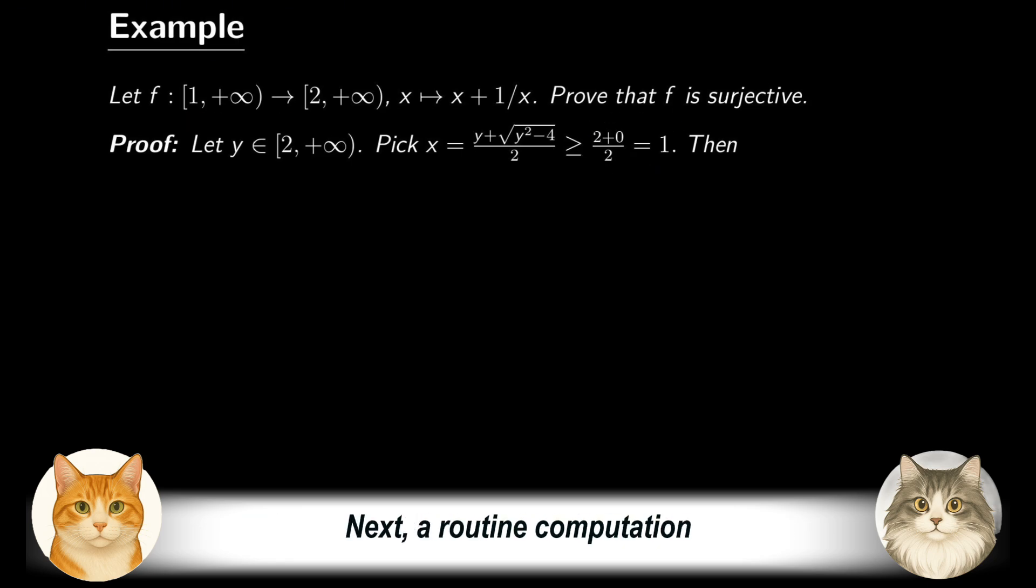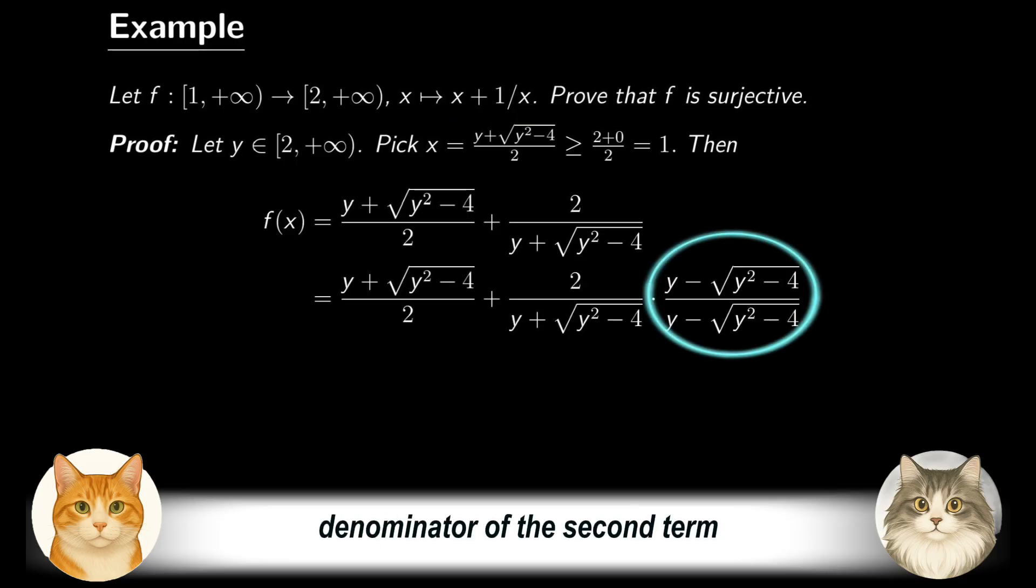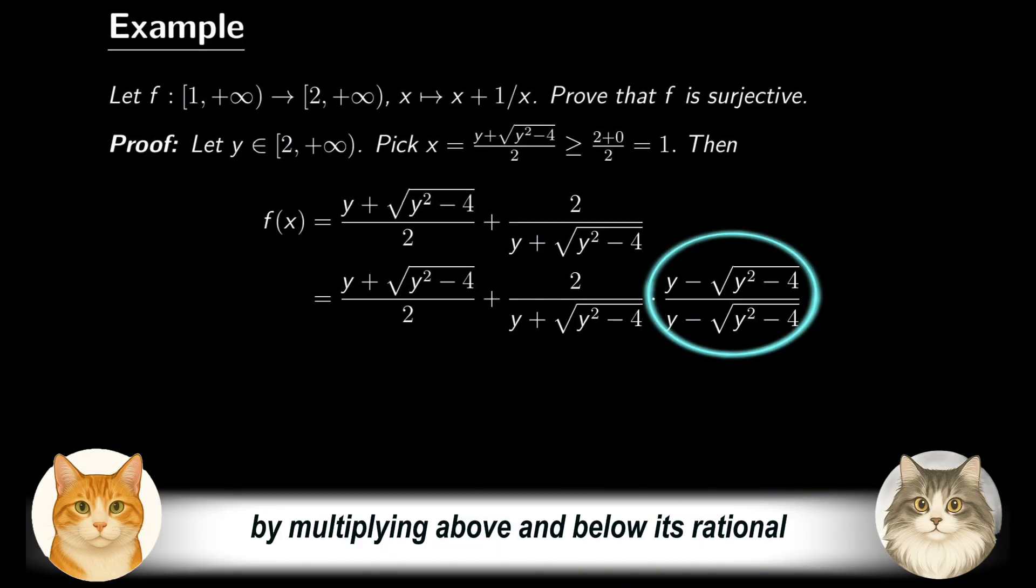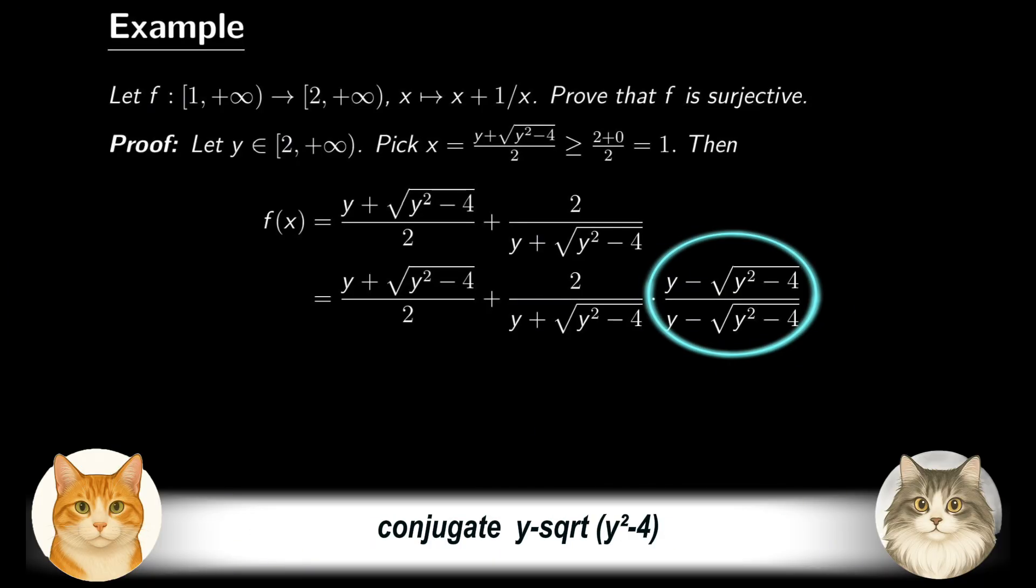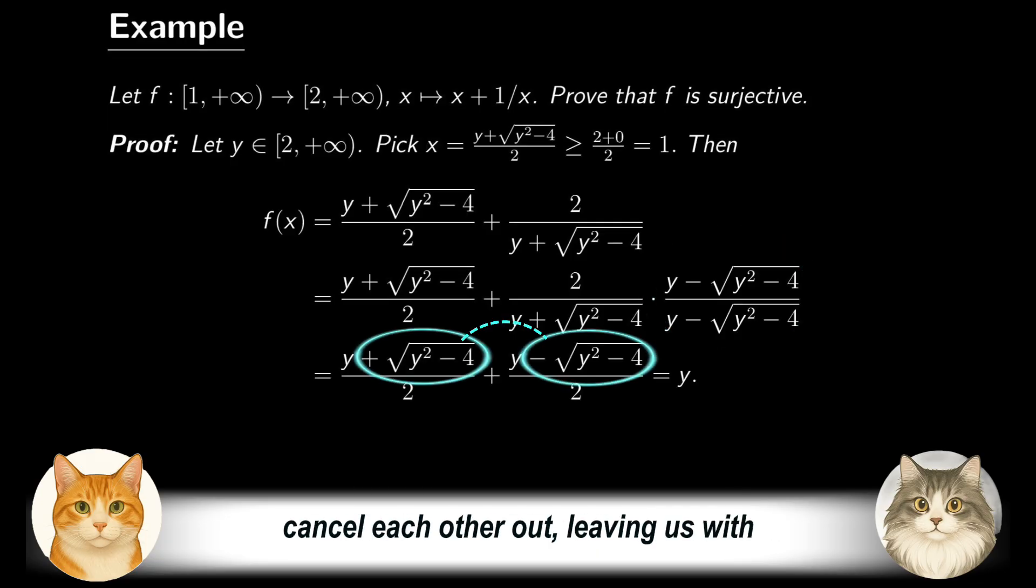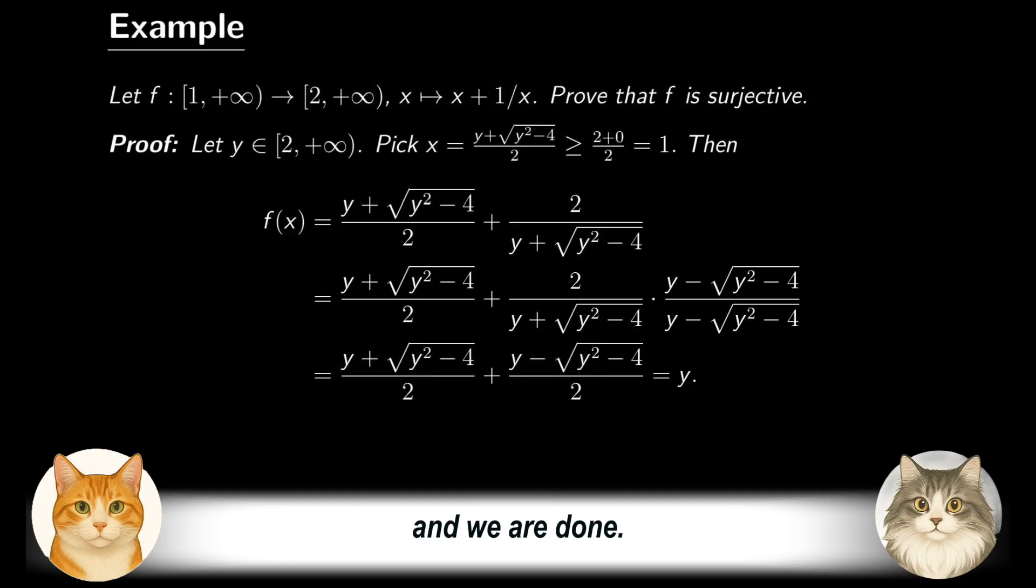Next, a routine computation verifies that f(x) equals y. Indeed, by the definition, f(x) is equal to x + 1/x. Plug in the specified x and rationalize the denominator of the second term by multiplying above and below its rational conjugate, y minus the square root of y² minus 4. Therefore, we see that the remaining two square roots cancel each other out, leaving us with 1/2 y + 1/2 y, which is precisely y, and we are done.